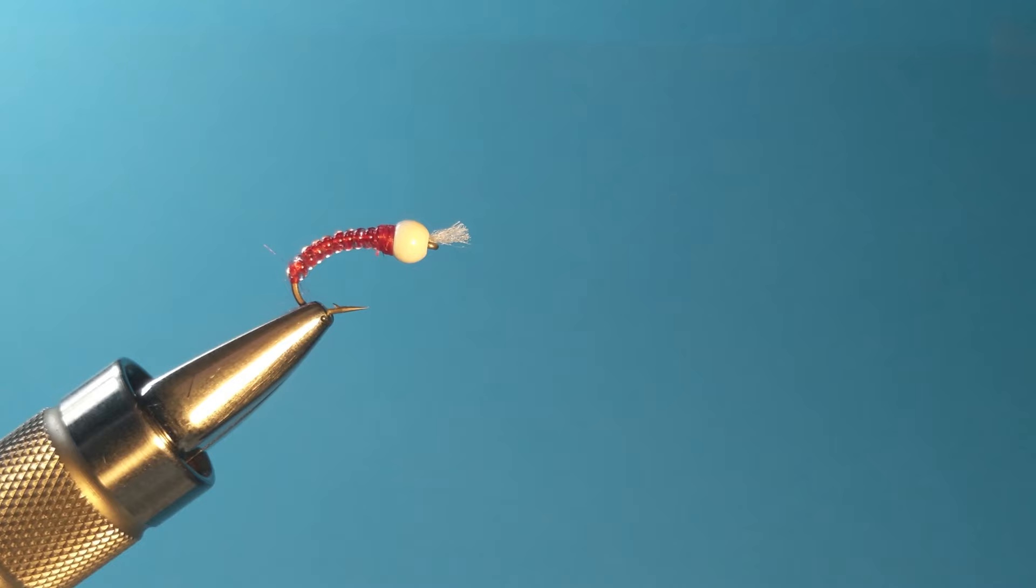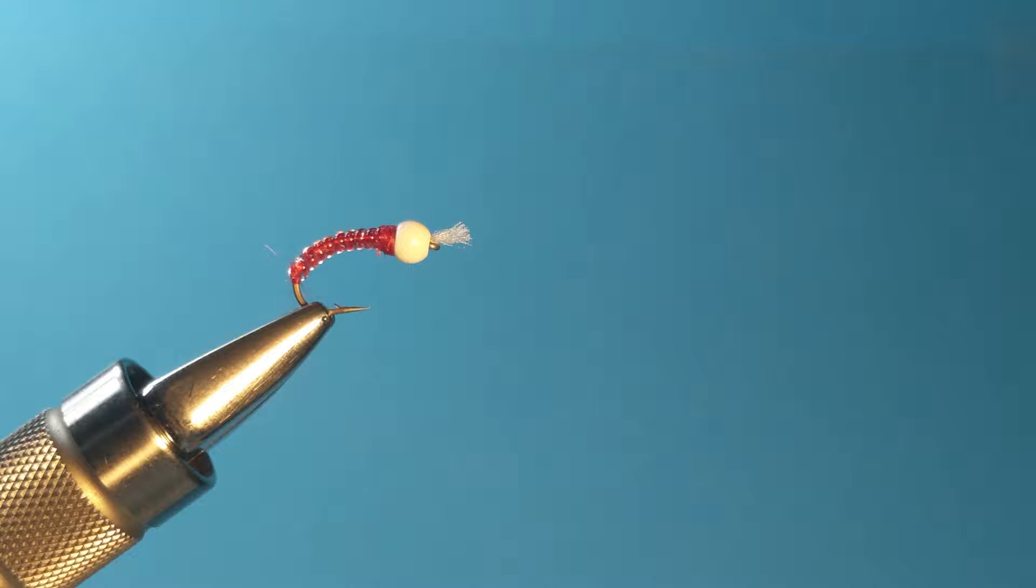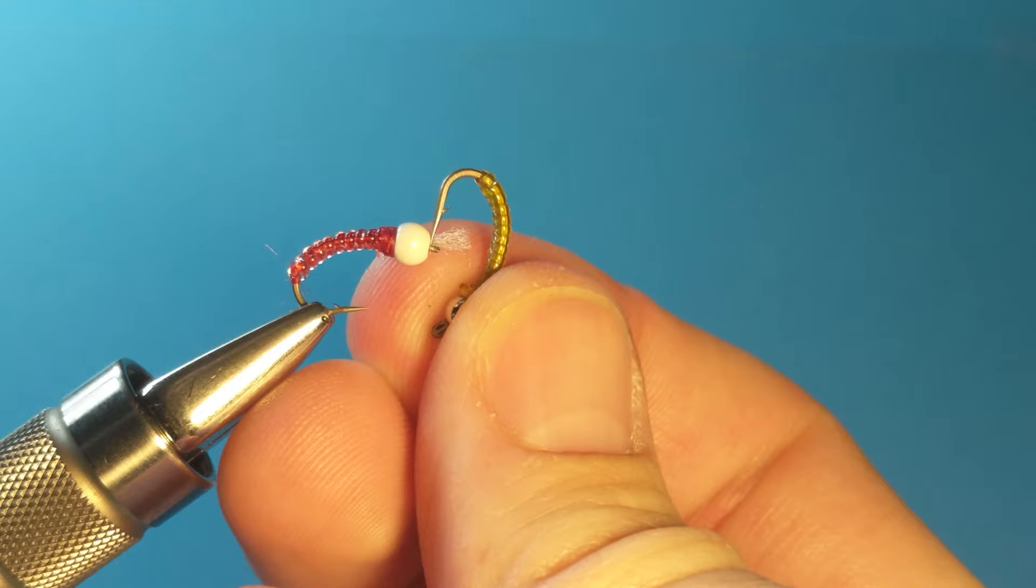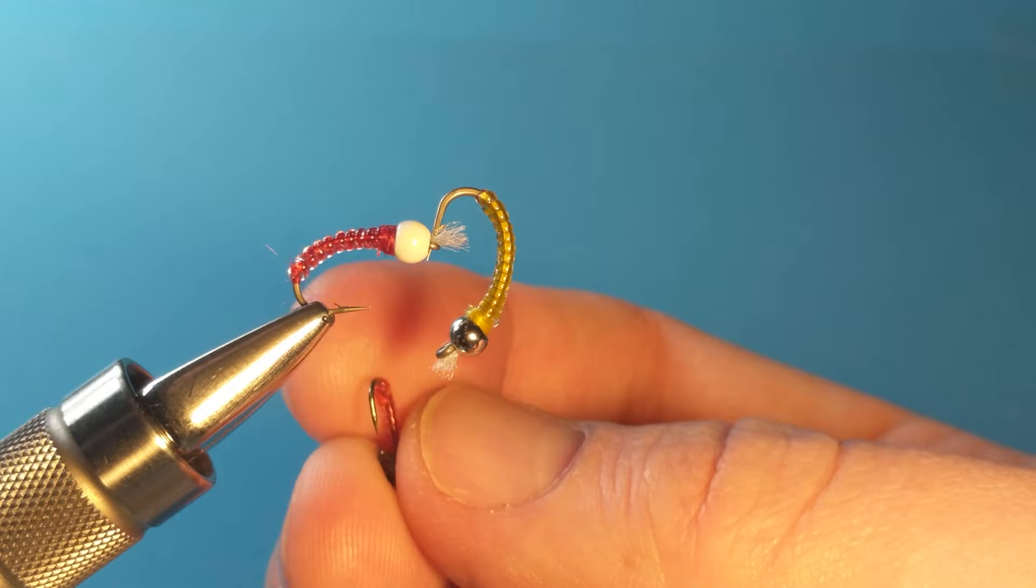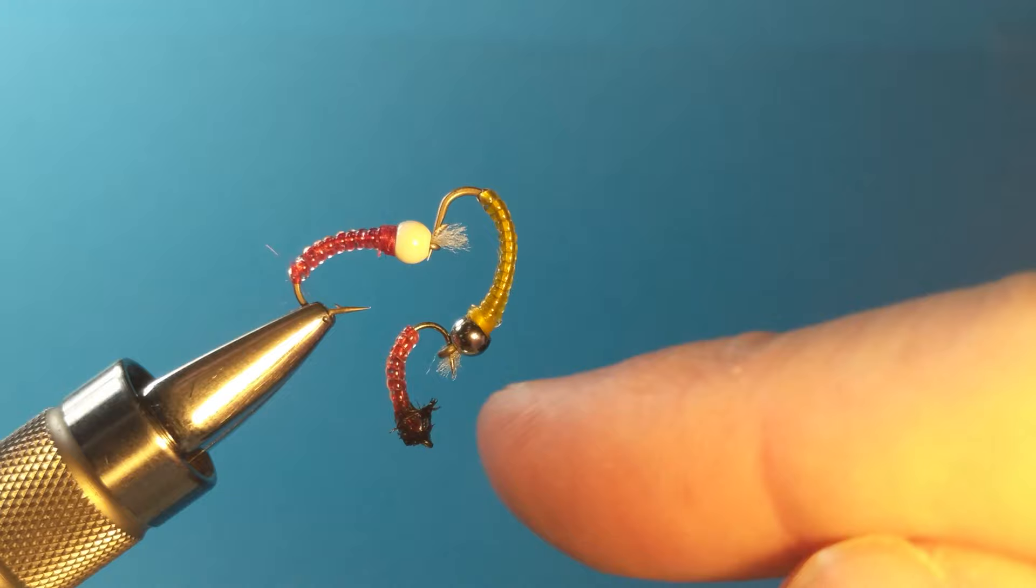So here's one with a yellow thread underneath it. A little bigger as well. I've made a couple with little peacock hurl heads. So there's another red one with a smaller bead and a peacock hurl head.